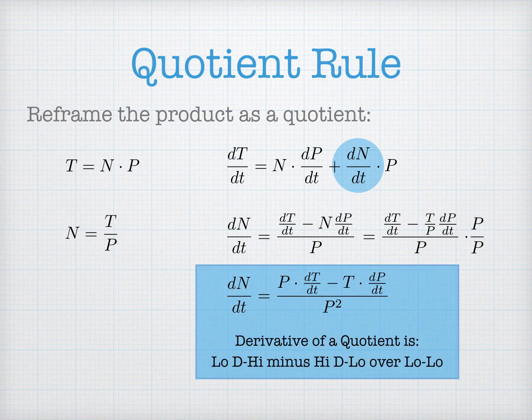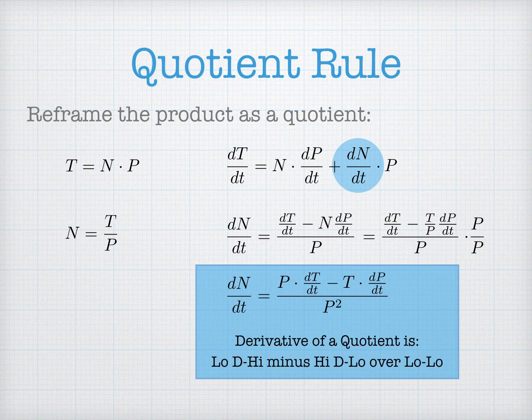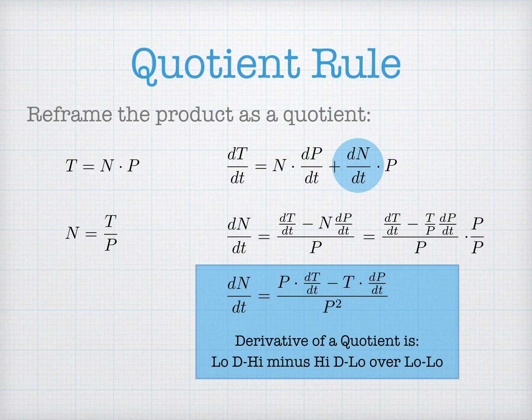The quotient rule says that when you have the derivative of a quotient, you take the function on the bottom — the denominator, I'll call it 'low' — times the derivative of the numerator — let's call that 'high' — so you get low d high minus high d low over low low. I like to sing this: low d high minus high d low over low low. And that's how you find the derivative of a quotient. So there you have it: rates of change found using the rates of change of components used to construct our formula.